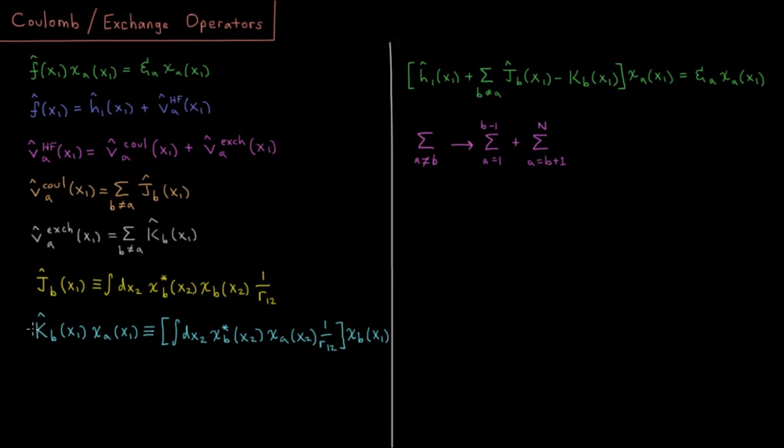So the more confusing operator now is going to be the exchange operator. And the exchange operator we can't actually write by itself. We have to write the exchange operator in terms of its action on a specific spin orbital.